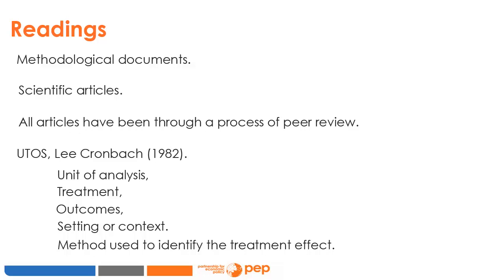When you read an article, try to identify those elements. Make sure you know the unit of analysis — it might be individuals, schools, villages, provinces, or anything. Summarize the treatment or intervention being studied in a few sentences. Clarify the outcomes being measured. And finally, try to understand the setting — the context in which the treatment takes place. This last step is very important and is often neglected, as programs and interventions might have different impacts in Mexico than in Vietnam. You might also want to write down the method or combination of methods used to identify the treatment effect.